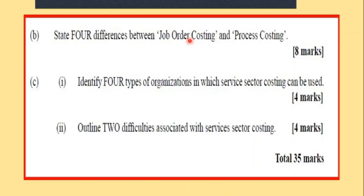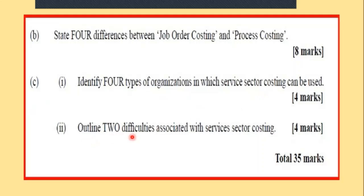Moving on to the next parts: Part B asks us to state four differences between job order costing and process costing. Part C asks us to identify four types of organizations in the service sector where costing can be used, and outline two difficulties associated with service sector costing.